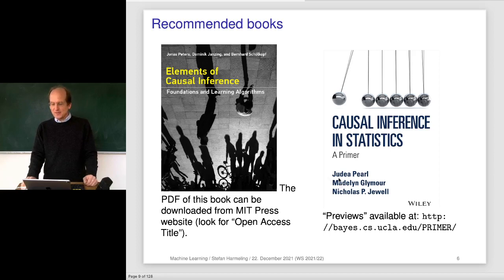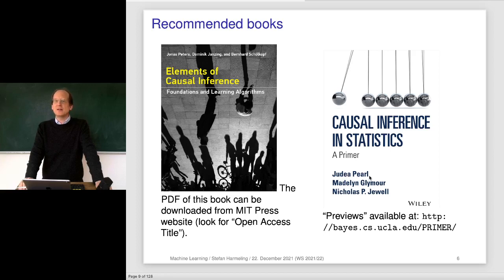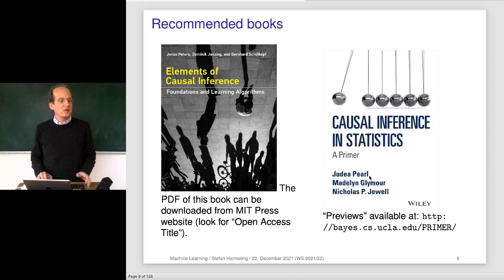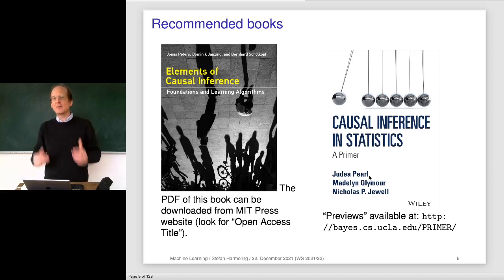There's another nice book from one of the pioneers, Judea Pearl, a computer scientist from University of Southern California. He got a Turing Award — the Nobel Prize of computer science — for his work on causality. He came up with a graphical way to think about causality. One of the earliest books on graphical models, 'Probabilistic Reasoning in Intelligent Systems,' is also from Judea Pearl.